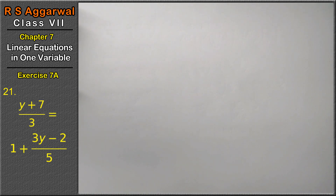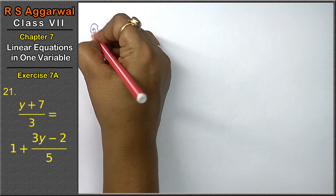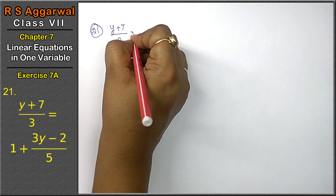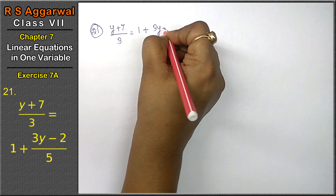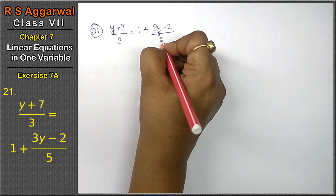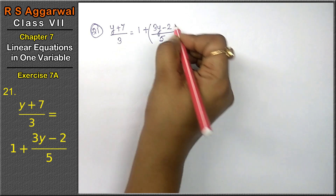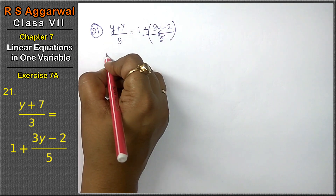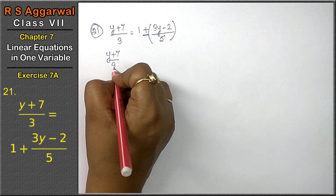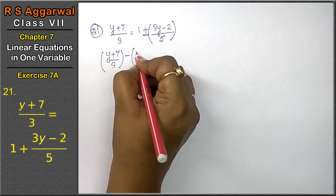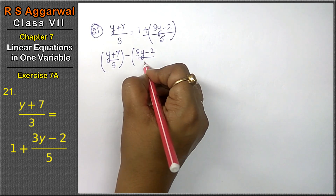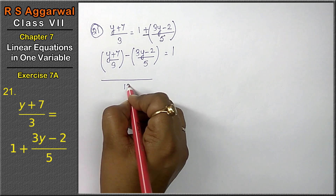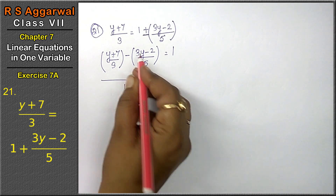Next, question 21: (y plus 7) upon 3 equals 1 plus (3y minus 2) upon 5. Friends, rearranging by moving the y term over: (y plus 7) upon 3 minus (3y minus 2) upon 5 equals 1. The LCM of 3 and 5 is 15.